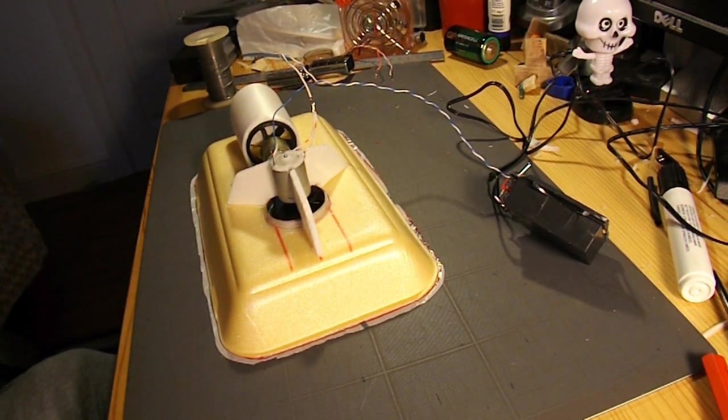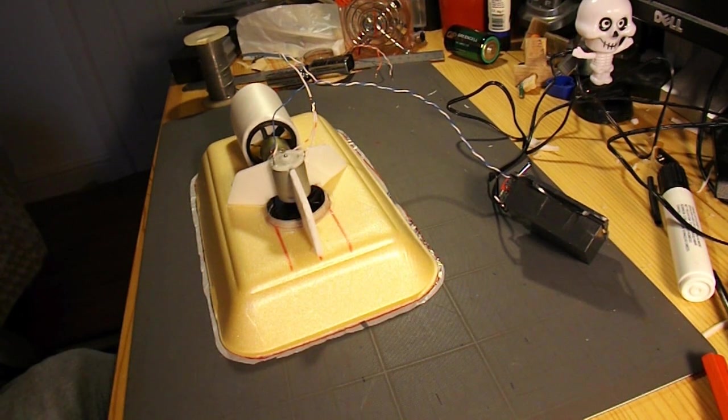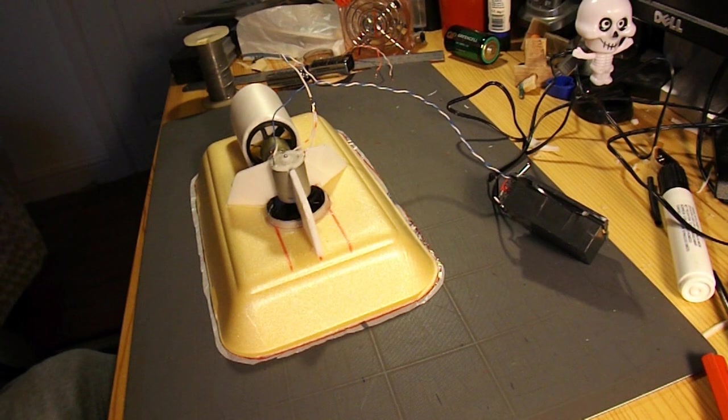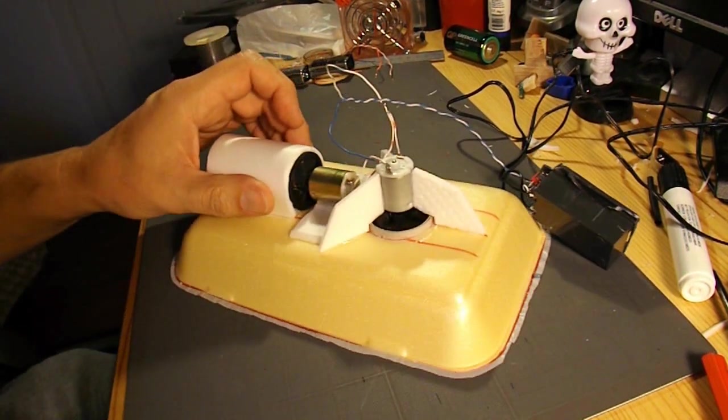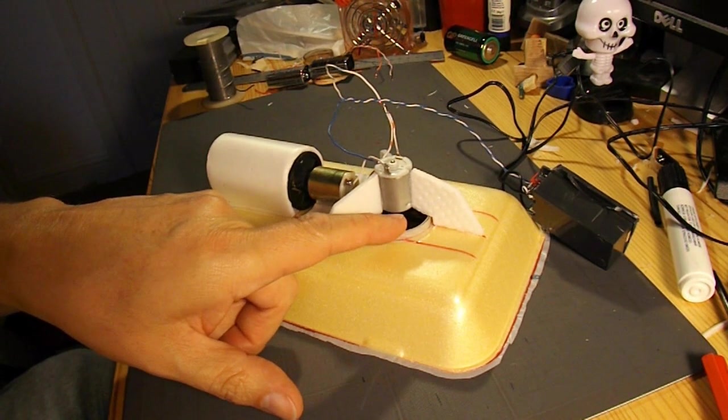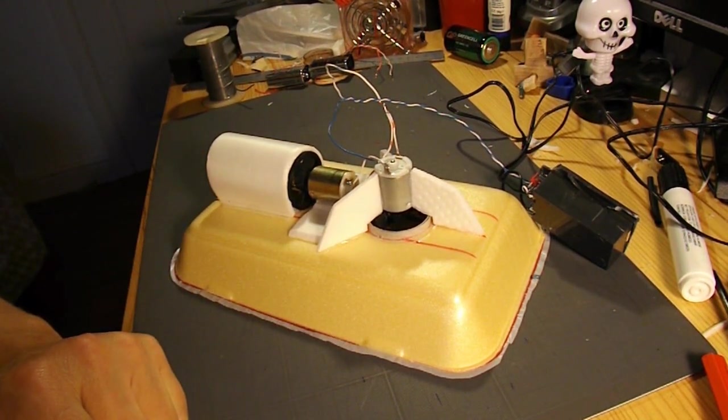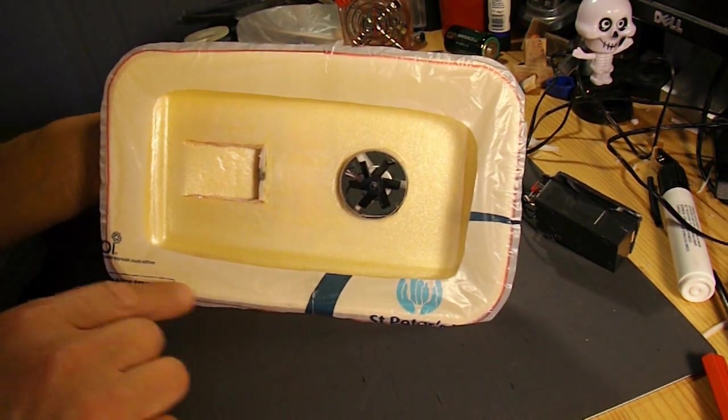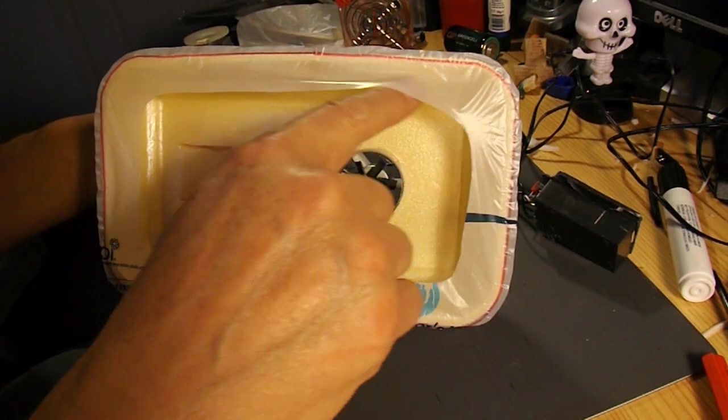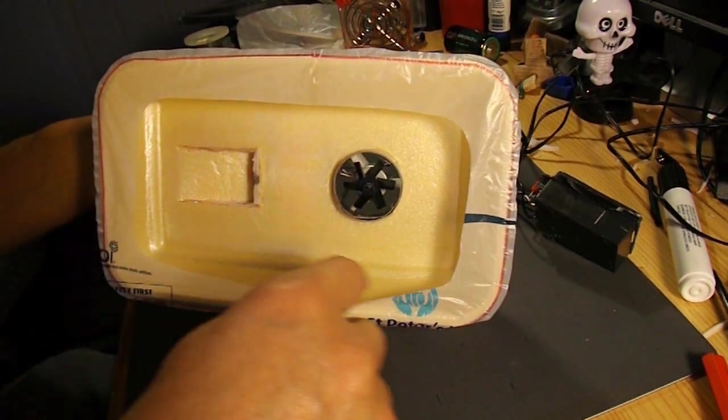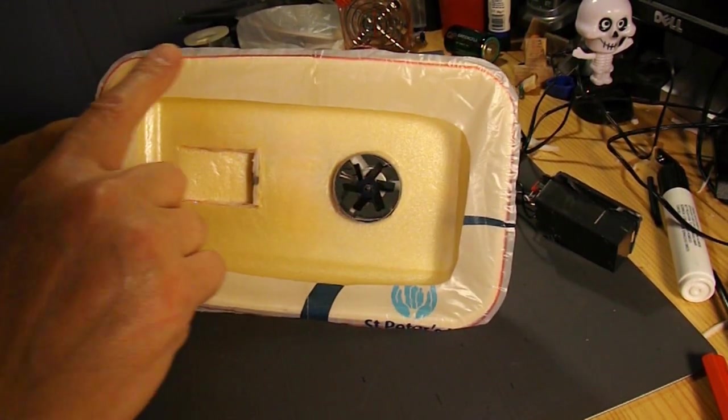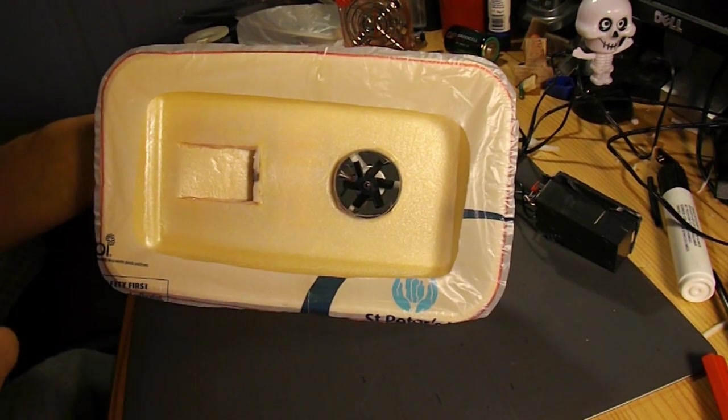So there we go. So that's the update to bargain store project number 8. The changes we made were we added an extra motor with an extra fan to give us a bit more air blowing into the body. We've put a skirt round the bottom to improve the seal. That's made out of a plastic bag just stuck round the outside edge.